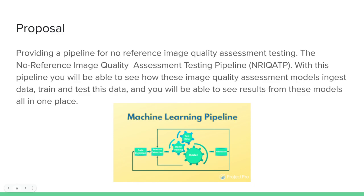For my proposal, I propose a no reference image quality assessment testing pipeline. This pipeline will be able to do multiple things that all no reference image quality papers and models do, all in one place. The pipeline will show how these models ingest data, train and test data, and display results from the models centrally. Many of these models test against each other, and having results in one place allows for much easier research. This pipeline has a lot of scope and I don't know if I will accomplish all the lofty expectations, but it will provide great hands-on work and be a valuable learning experience.